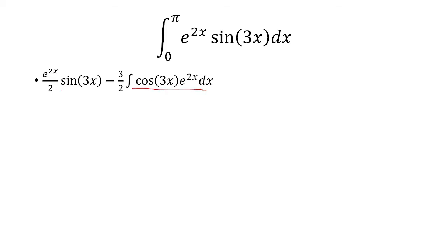So let's ignore e to the 2x over 2 sine 3x minus 3 halves. So we'll say u is cosine 3x, and dv is e to the 2x. So the derivative of cosine 3x is negative 3 sine 3x, and then the antiderivative of e to the 2x is e to the 2x over 2.